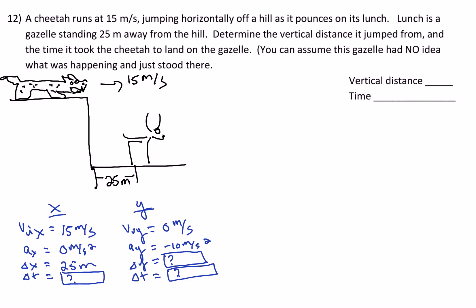Your givens and unknowns should look something like this. You know that the initial velocity in the x direction is 15 meters per second. Initial velocity in the y direction downward is zero. The acceleration in the x direction is zero meters per second squared. The acceleration in the y direction is gravity, negative 10 meters per second squared. The delta x is 25. We want to find delta y and delta t.